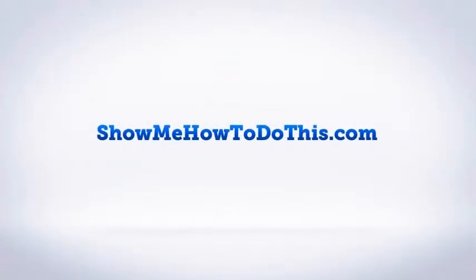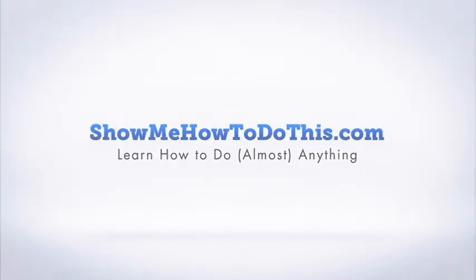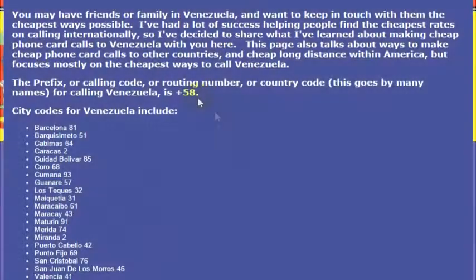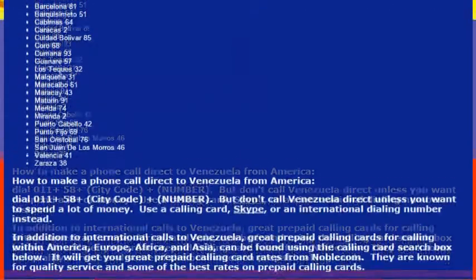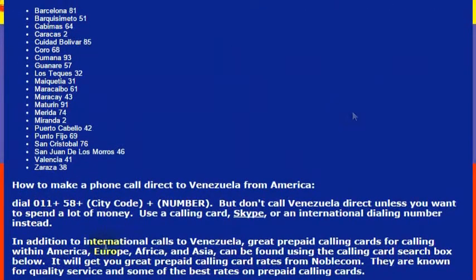To call Venezuela it's very simple. You need to know the country code, which is 58. To make an outbound call from a landline in the United States, you dial 011 — that gets you the international dialing outbound line — then you dial 58, which is the country code for Venezuela, followed by the number you want to dial.